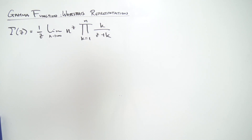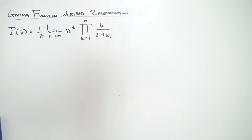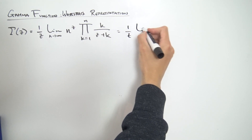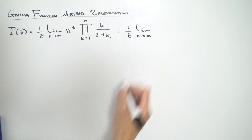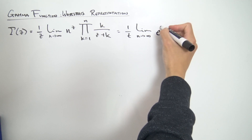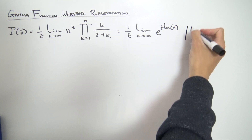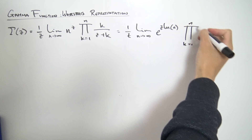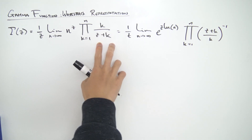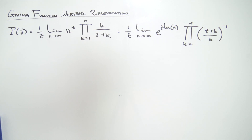First, I want to rewrite a couple of things. Notice that k over z plus k — we can reciprocate that and raise it to the negative one power, and that's going to be the same. So we're going to have 1 over z, limit as n approaches infinity. I'm also going to turn this n to the z into base e, so we have e to the z times the natural log of n, and then the product going from k equals 1 to n of (z plus k) over k to the minus one.